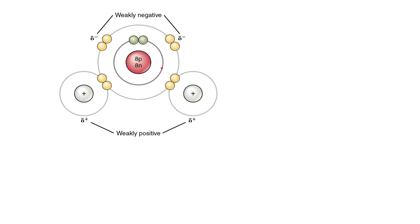Now because the oxygen atom has more protons in its nucleus than the hydrogen atoms — the oxygen having eight and each hydrogen atom having only one — we say that the oxygen atom is more electronegative than the hydrogen atoms.